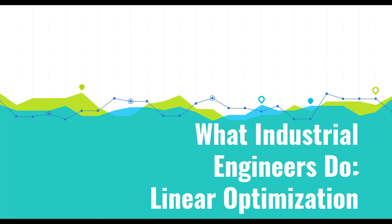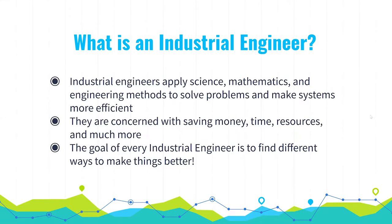Today we're going to be talking about what industrial engineers do and linear optimization. Industrial engineers apply science, mathematics, and engineering methods to solve problems and make systems more efficient. They're concerned with saving money, time, resources, and many other important factors concerned with making money.